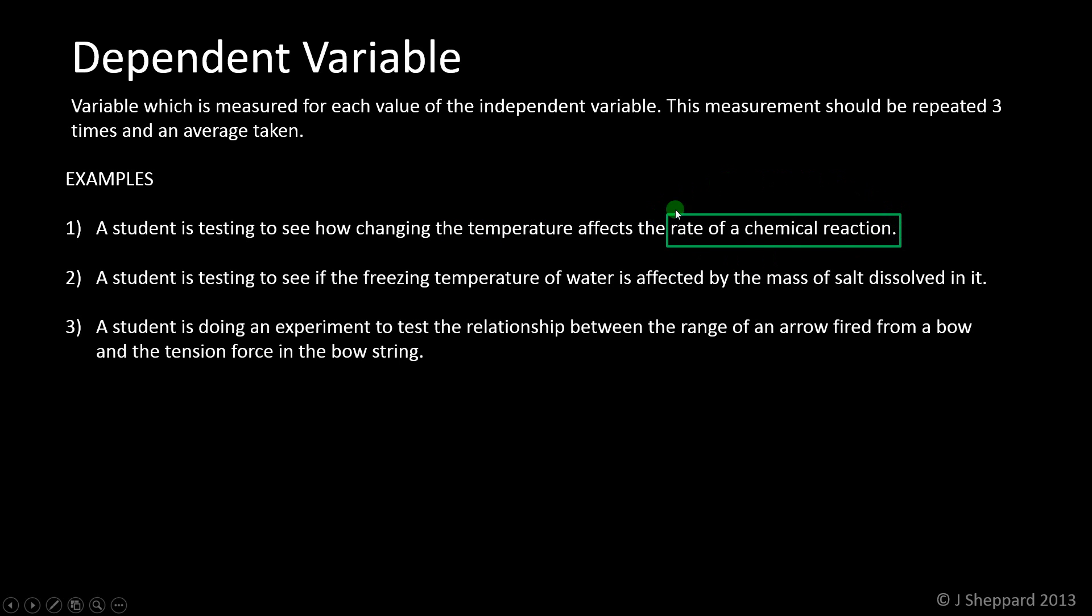We haven't talked about how we might measure rate, but that's not really what we're worried about here. We're just identifying the variable. Rate of the chemical reaction is the dependent variable in example one.